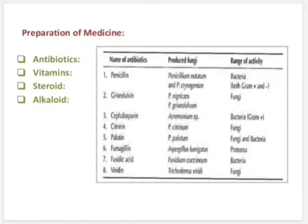Use of fungi as foods. Fungi have been used as food by humans for a long time. Some fungi are used directly as food and some are used in food processing. Fruit bodies of some fungi like mushrooms and truffles are used as food due to their high protein content, containing 21 to 30% on dry weight, and they have good amounts of lysine and amino acids.